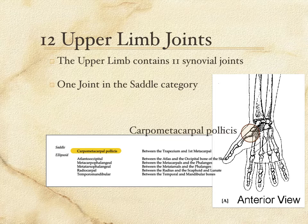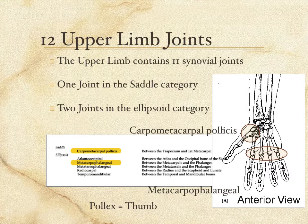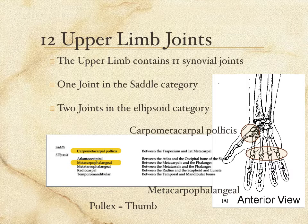The ellipsoid category has two joints. The first is the metacarpophalangeal joint — the long bones in the palm joined to the proximal phalanges of each finger. Most people call these their knuckles. They are ellipsoid because not only do your fingers hinge where they connect to your hand, but you can also spread them side to side — abduct and adduct your fingers there.